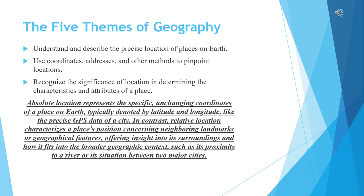Whenever we talk about the field of geography, we think about the five themes of geography. We're going to understand and describe the precise location of places on earth, use coordinate addresses and other methods to pinpoint certain locations, and recognize the significance of location in determining the characteristics and attributes of a certain place. We'll differentiate between two different types of locations.